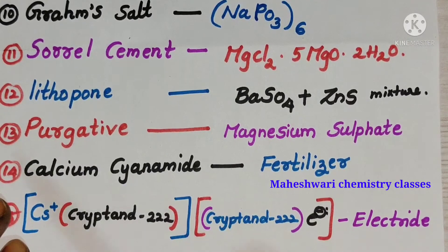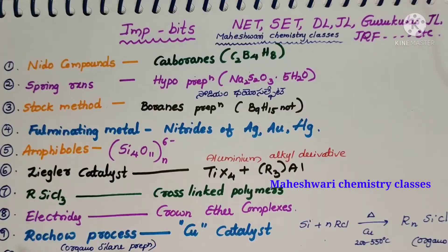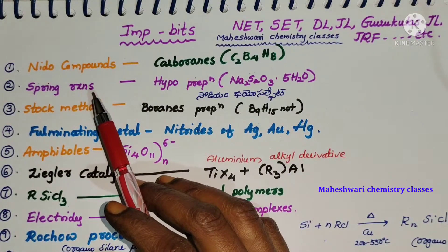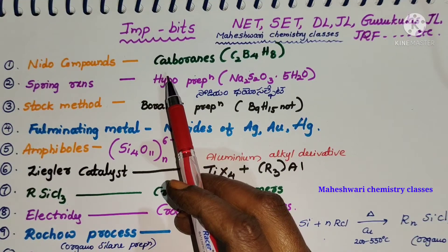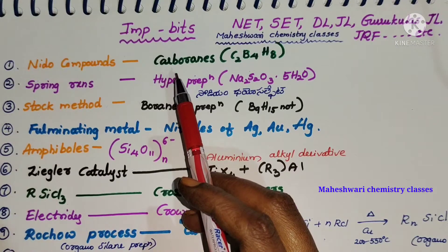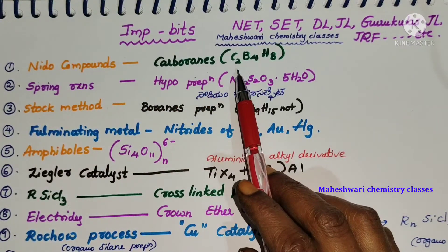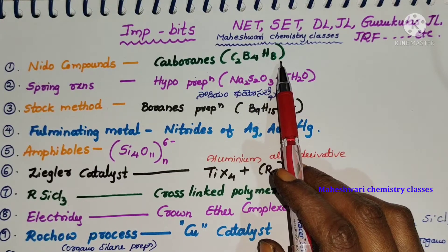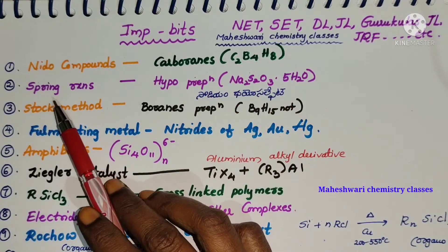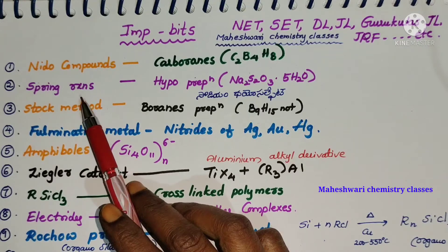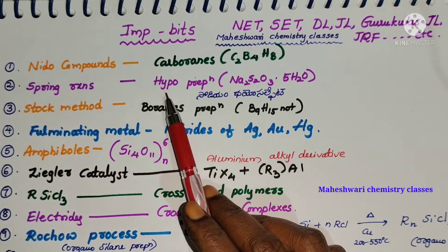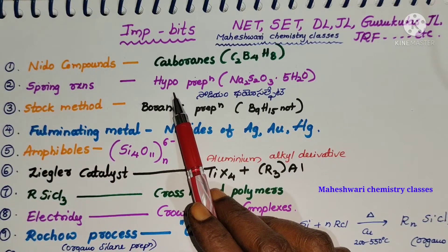Nido compounds. Actually carboranes are three types, one type is nido carboranes. Here formula C2B4H8. Next, spring reactions. In spring we may prepare hypo, hypo nothing but sodium thiosulfate Na2S2O3 5 moles of water.